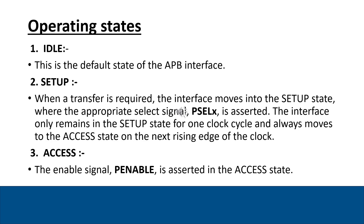Now, coming to the operating states of the APB protocol. The APB protocol operates in three main states. The first one is the idle state — all signals are at their default values and no transfer is happening. The next one is the setup state — the PSEL signal is asserted indicating the start of transfer. It lasts for only one clock cycle, after which the access state begins. In the access state, the PENABLE signal is asserted, and when both PENABLE and PREADY are high, the actual data transfer happens.